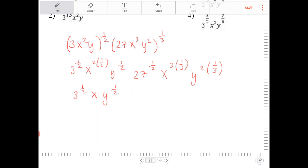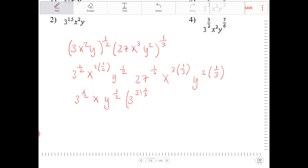27 is really three to the third. So let me get rid of this. And I'll get back to that in a moment. And then I have x to the third to the one third. So that's just x to the first, because 3 times one third is 1. And then y to the two thirds.